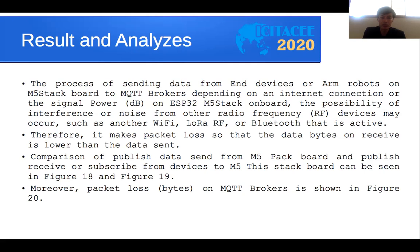The results and analysis show the process of sending data from the end device or arm robot on the M5 Stack board to the MQTT broker depends on the internet connection and signal power in dB on the ESP32 M5 Stack on-board. The possibility of interference or noise from other radio frequency devices — such as another Wi-Fi, LoRa, and Bluetooth that are active — may cause packet loss, so the data received is lower than the data sent. A comparison of published data sent from the M5 Stack board and data received by subscribing from device to M5 Stack board can be seen in figures 18 and 19.